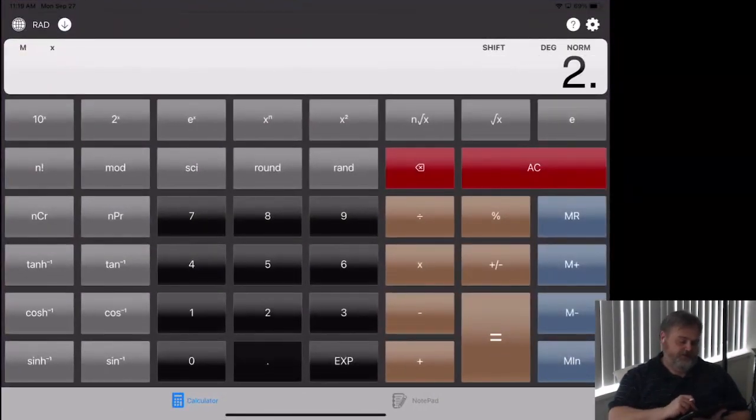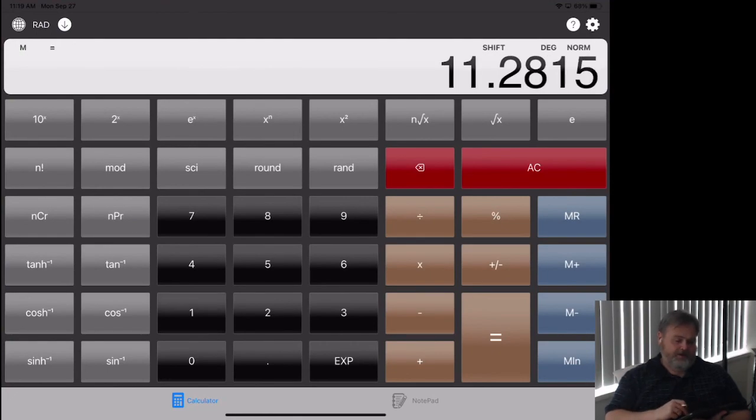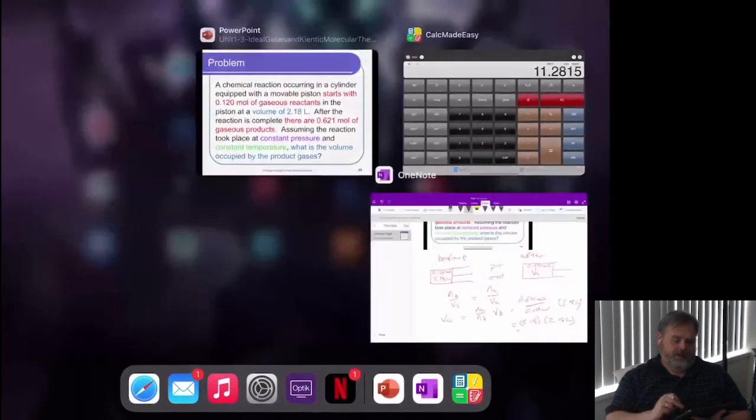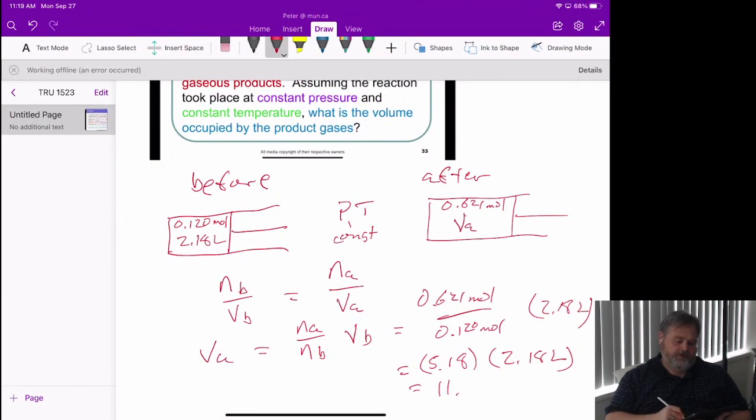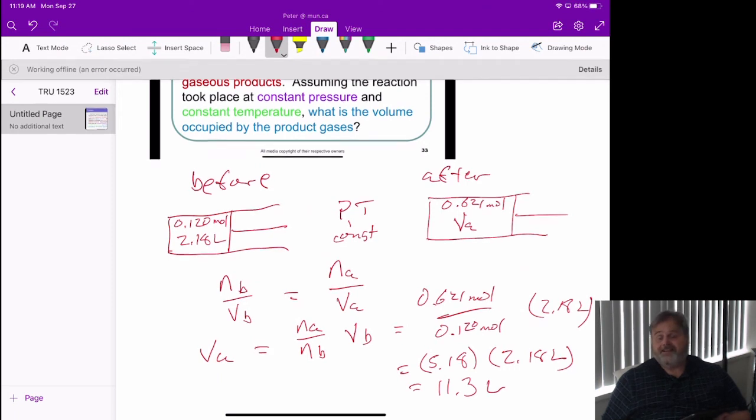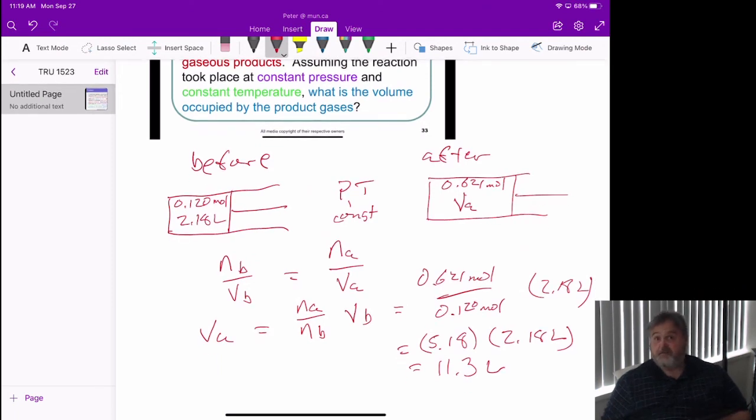So times 2.18, and we're going to get a wonderful volume of 11.3 liters for this new situation. We saw that the gas expanded just because there's more gas that needs room and needs to spread its energy out.